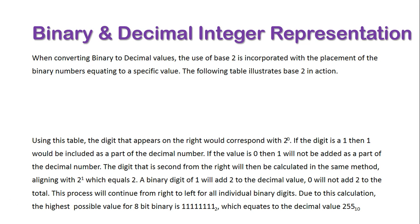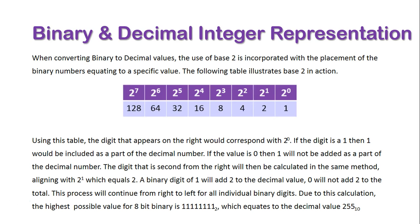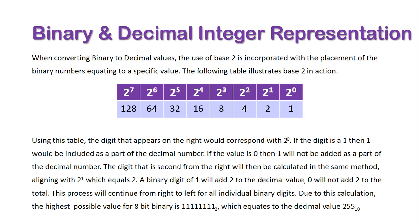Let's have a look at how these can be converted quite simply. When converting binary to decimal values, the use of base 2 is incorporated with the placement of the binary numbers equating to a specific value. The following table illustrates the base 2 in action. Here is the table, and we'll just explain how this table works.